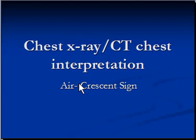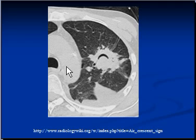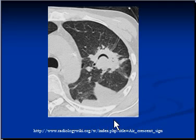In this chest X-ray and CT scan chest interpretation, we discuss the air crescent sign. You are seeing a CT scan imaging in lung window, taken at the level of the aortic arch. This is obviously the left lung, clearly showing more than one abnormality.